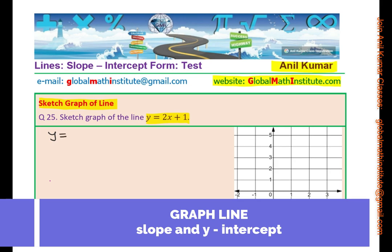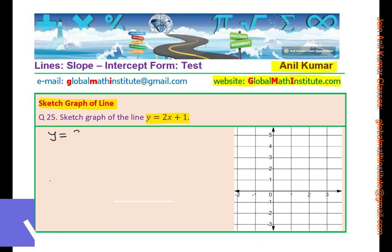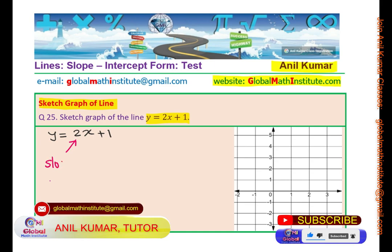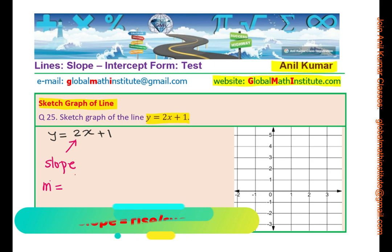Here in the very first example, which is question 25 from our series having 60 equations, we have y equals to 2x plus 1. Let's try to understand the equation itself. Here 2 is the slope, normally written as m, which is change in y over change in x. So we are considering equation of a line y equals to mx plus b.